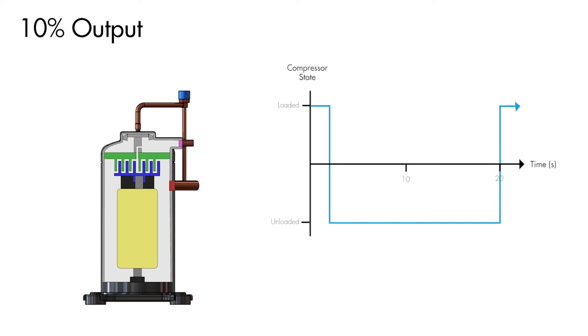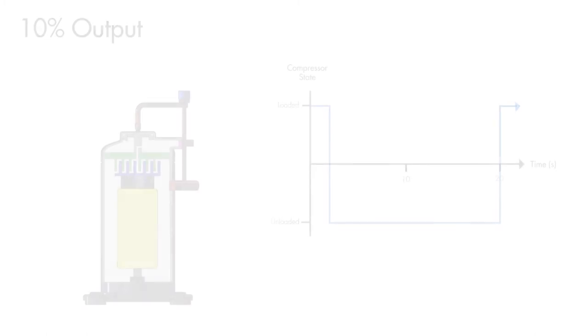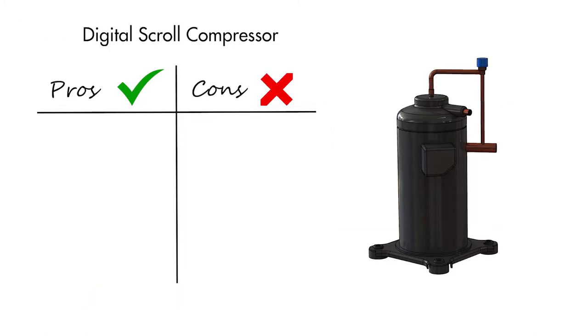This results in an average capacity output of 10%. So now that we understand the operating principle of the digital scroll compressor, let's go over where it is good and not so good.